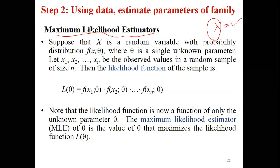The first method is the maximum likelihood estimator. A maximum likelihood estimator says that you have the distribution of every value. Here, theta is the parameter. L(theta) is the likelihood function — this is a single unknown parameter. So L(theta) is a function of the distribution parameter theta, where x1, x2, up to xn are the values from that distribution.